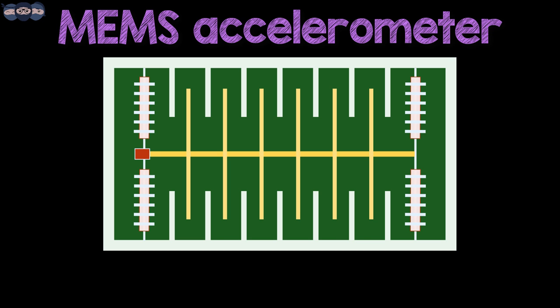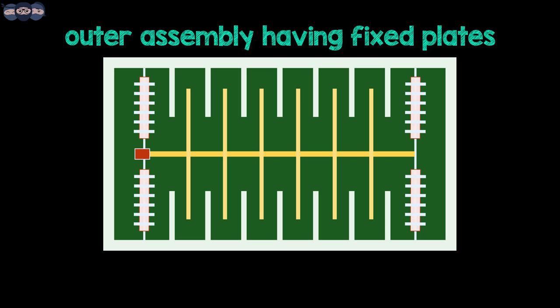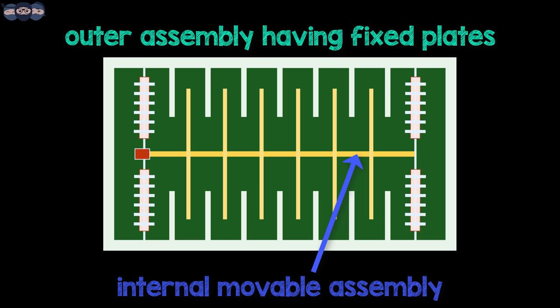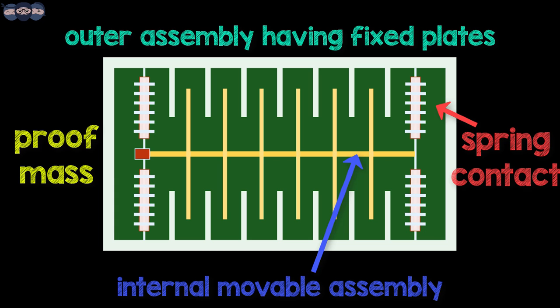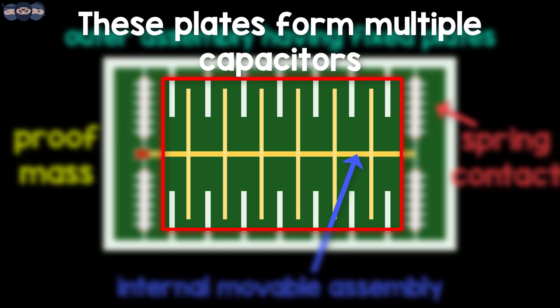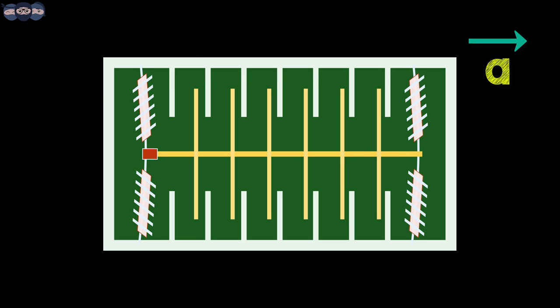Looking at the diagram, we can see a series of fixed plates on the outer assembly. Then there is an internal movable assembly. It has a small mass and is connected to outer assembly using spring contacts. The movable assembly also has plates which form a capacitor with plates of the outer fixed assembly. As the system moves due to acceleration,